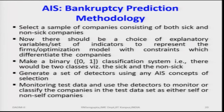In the bankruptcy prediction methodology, you select a sample of companies consisting of both sick and non-sick companies. There should be a choice of explanatory variables — indicators representing whether the company is going to fail or not. Parameters can include assets, market share, balance sheet variables, depreciation value, loan amounts, stock market performance, land prices, and the ratio of sales to total assets. In general accounting we have about fourteen ratios to analyze how well a company is doing, and additionally market share and stock prices can be utilized to predict company performance in the coming days and the future.